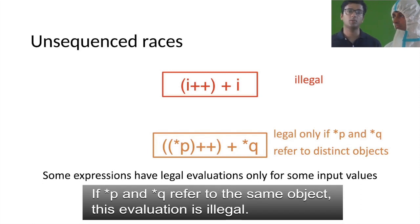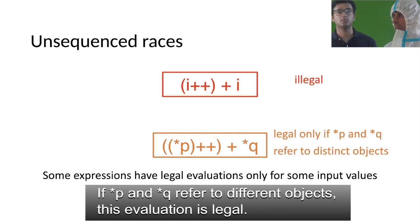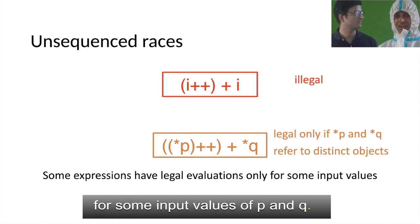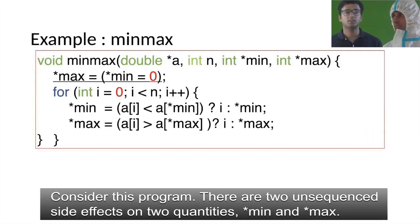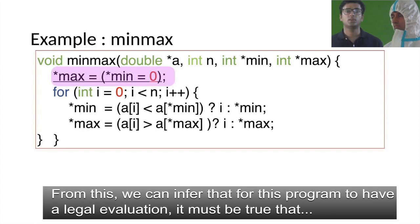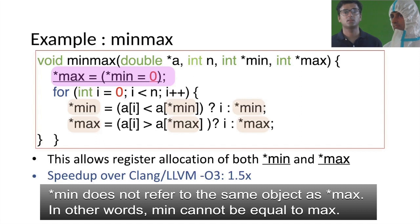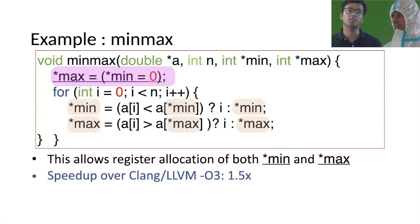If *p and *q refer to the same memory object, the evaluation of this expression is illegal. But if *p and *q refer to different memory objects, then the evaluation is legal — only for some input values of p and q. Now consider this program: there are two unsequenced side effects on *min and *max. We can infer that for this program to have a legal evaluation, *min must not refer to the same object as *max — in other words, min cannot equal max. This fact can be used by the compiler to register-allocate *min and *max throughout the following loop, resulting in a speedup of 1.5x over already optimized code.